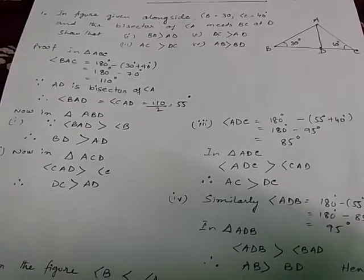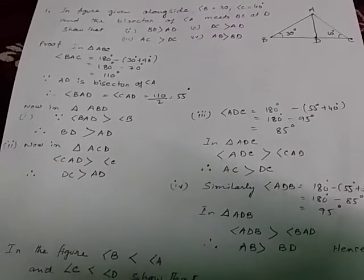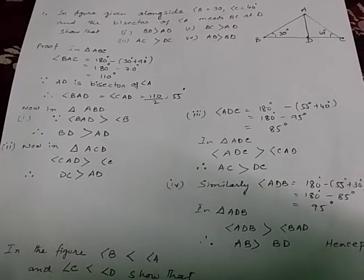Number 2. In triangle ACD, angle CAD is greater than C. Therefore DC is greater than AD.